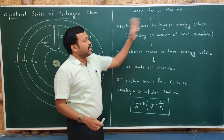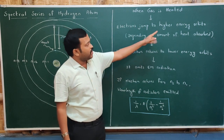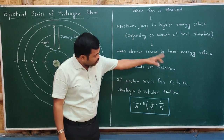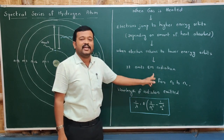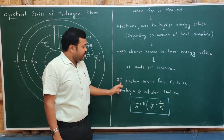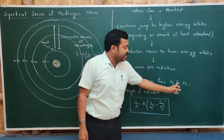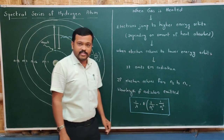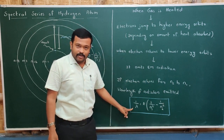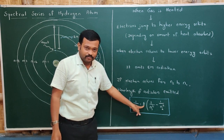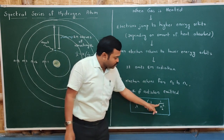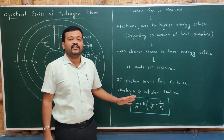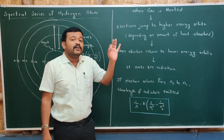When gas is heated, electrons jump to higher energy orbits depending on the amount of heat absorbed. When the electron returns to a lower energy orbit, it emits electromagnetic radiation. If an electron returns from n₂ to n₁ (second to first orbit), the wavelength is given by 1/λ = R(1/n₁² − 1/n₂²).